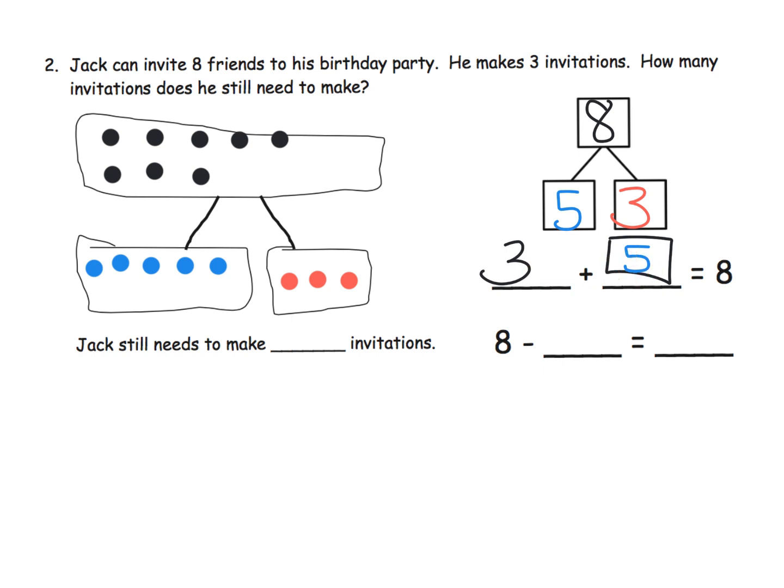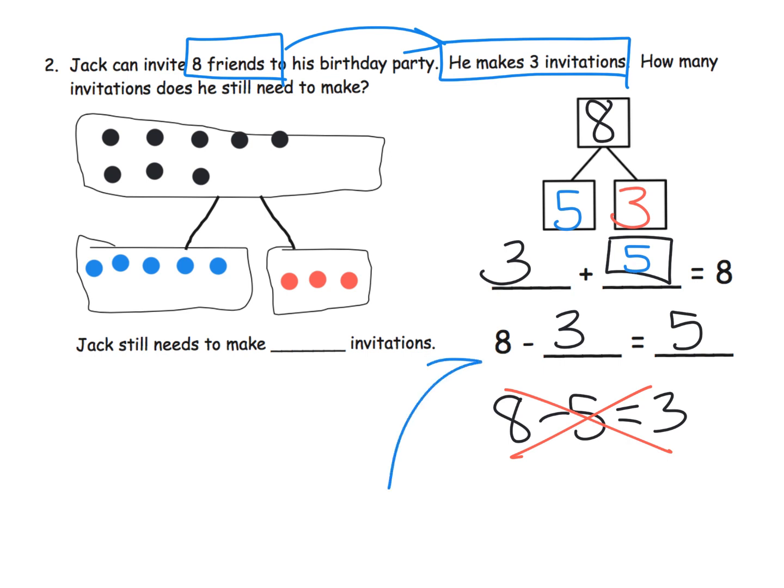So three plus five equals eight. Another way to think of that as subtraction would be eight minus three equals five. We want eight minus three equals five rather than eight minus five equals three because in the question, we are told he makes three invitations. So that's why eight friends, three invitations, so that's why we specifically want eight minus three is equaling five. So how many invitations does he still need to make? That would be five.